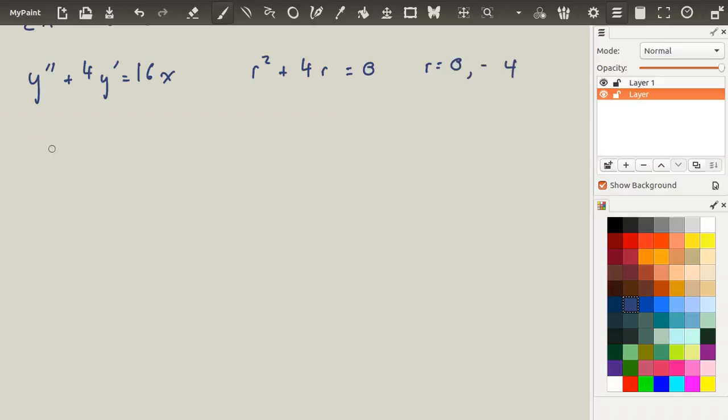This means that our yc is equal to c1 plus c2 to the negative 4x. And our y is equal to yc plus yp. And that's equal to c1 plus c2e to the negative 4x.